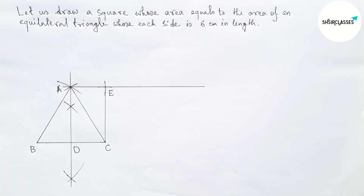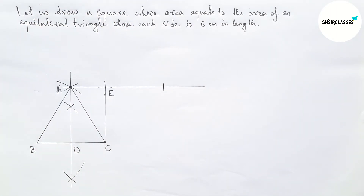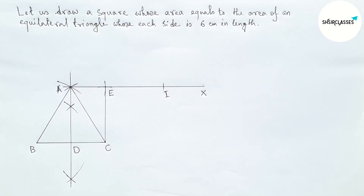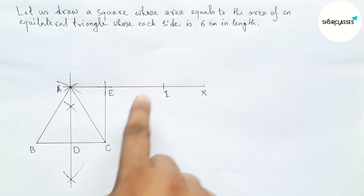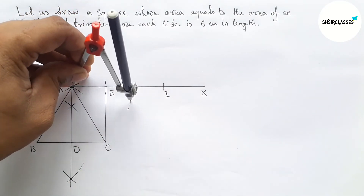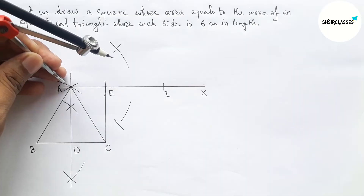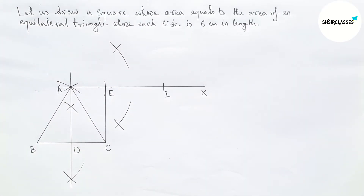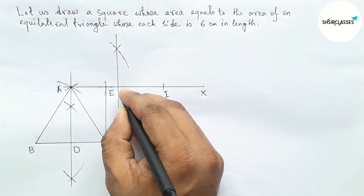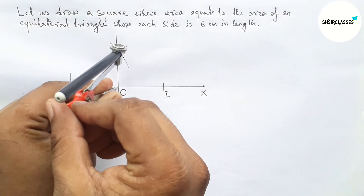Next, taking the length CE and putting the compass on point E, cutting the line here. Taking point I. Next, bisecting the line AI: putting the compass on point I and taking greater than half of AI, drawing an arc. Drawing an arc with the same length and cutting here. Now joining the perpendicular bisector which bisects AI at point O.